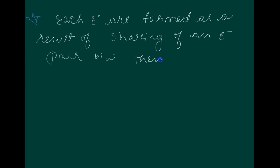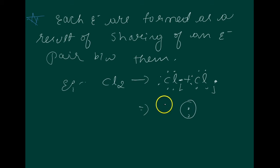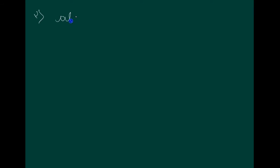Each bond is formed as a result of sharing of an electron pair between the atoms, for example Cl2 — chlorine plus chlorine. By considering these electrons they share and form the covalent bond. The next condition is that each combining atom contributes at least one electron to the shared pair.